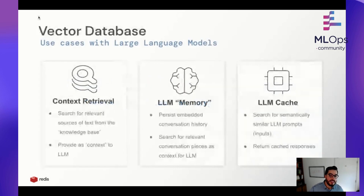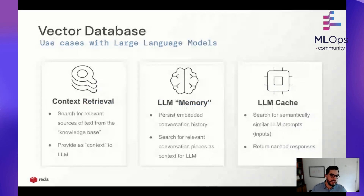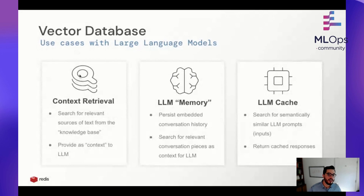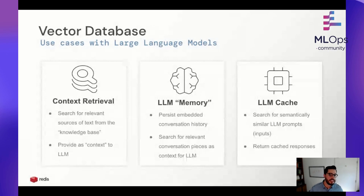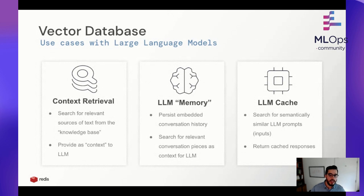There are three use cases we'll talk about today: context retrieval, large language model memory, and large language model caching. The hottest one right now is context retrieval — you see people doing this with retrievers in LangChain. The way I like to think about it: the vector database is a golden retriever, and the large language model is someone playing fetch. The operations performed by a vector database are relatively simple and straightforward, just like playing fetch.